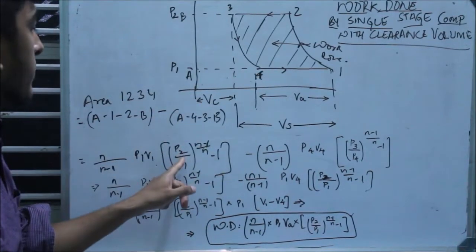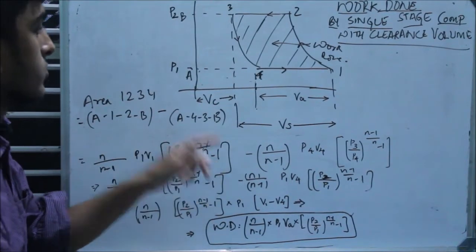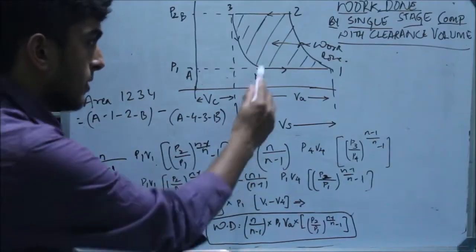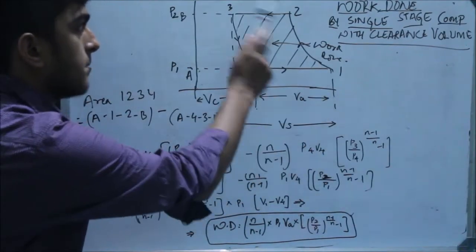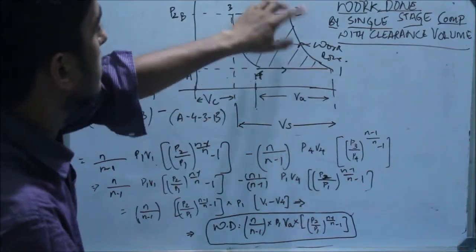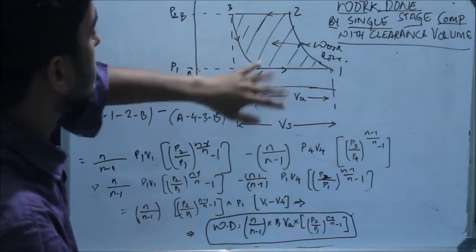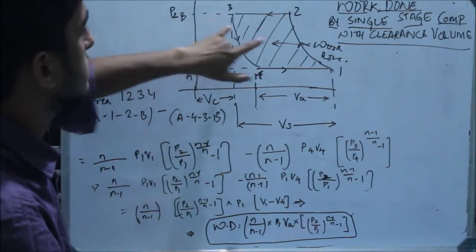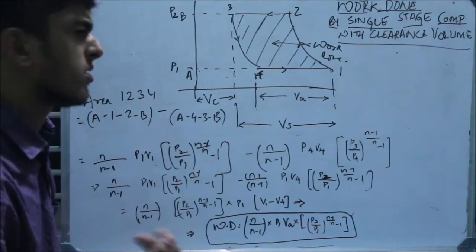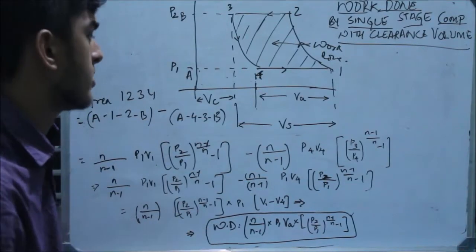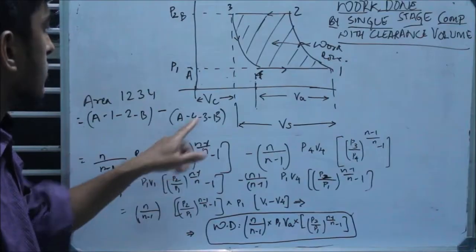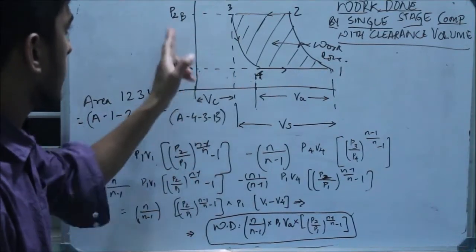There are a few other things we need to remember: P4 is equal to P1 and P3 is equal to P2. The curve 1 to 2 is equal to curve 3 to 4 — these both curves are polytropic curves. These are the two assumptions that we make. And next, we need to subtract A43B.